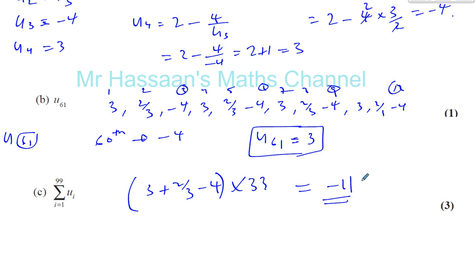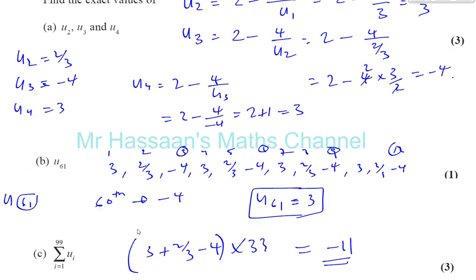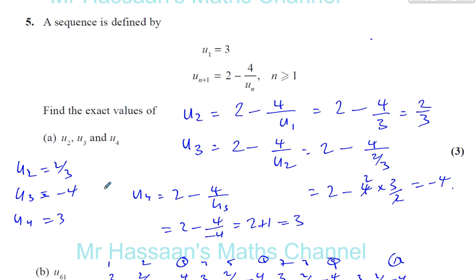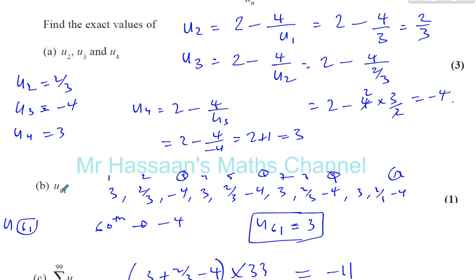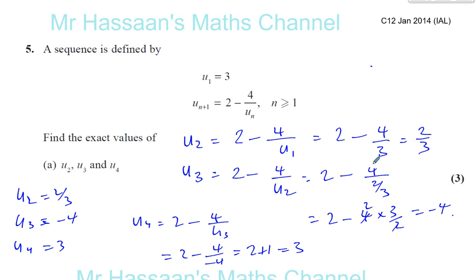So there we have it. It looks a bit complicated when you look at it at first, but actually, once you see that these numbers are going to repeat again and again, it becomes pretty easy for you to be able to deduce the rest of the question. So there we have question number 5, C12, January 2014, IAL. Thank you for watching.